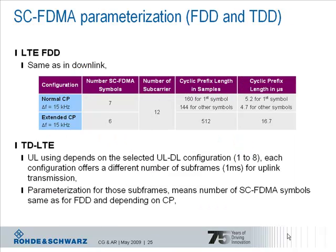As already emphasized by Christina, LTE uses two modes: Frequency Division Duplex (FDD) and Time Division Duplex (TDD). The parameterization in the uplink for FDD is the same as in the downlink. Two different cyclic prefixes are used — normal and extended — giving 6 and 7 Single Carrier FDMA symbols in the uplink respectively. For TD-LTE, the usage of the uplink depends on the selected uplink-downlink configuration, as each configuration offers a different number of subframes assigned for uplink transmission. The parameterization of those subframes is equal to FDD mode and depends on the selected cyclic prefix.